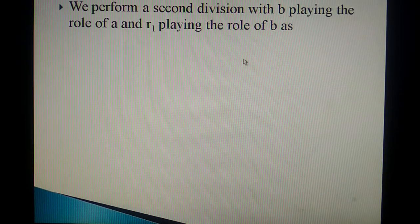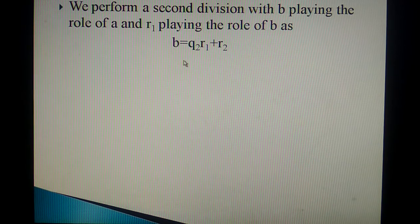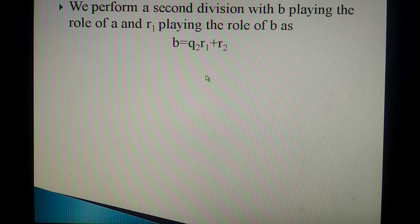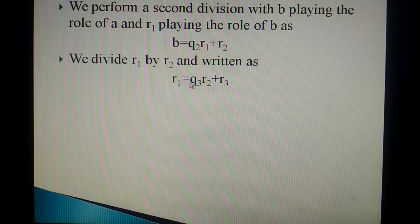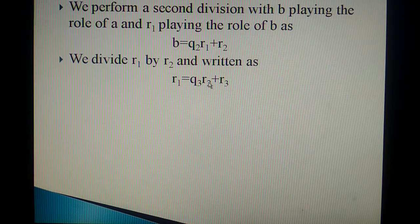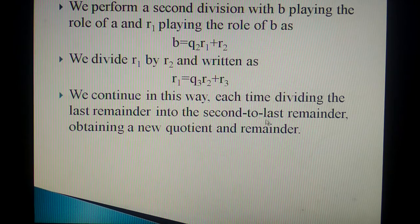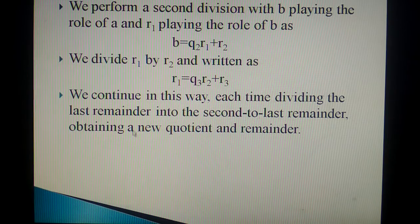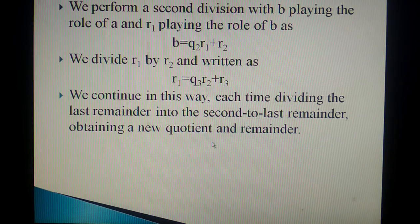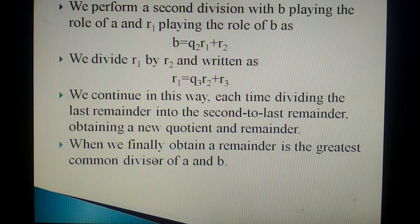We perform a second division with B playing the role of A and R1 playing the role of B as B is equal to Q2 into R1 plus R2. In the same way, you write R1 is equal to Q3, the quotient, into R2 plus the remainder. We continue in this way each time dividing the last remainder into the second to last remainder, obtaining a new quotient and remainder. When we finally obtain a remainder zero, the previous remainder is the greatest common divisor of A comma B, that is the GCD of A comma B.